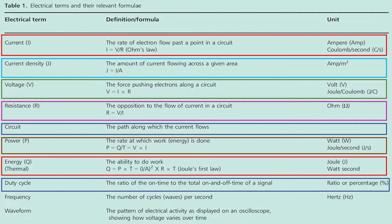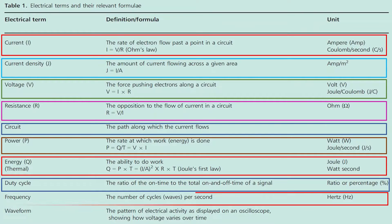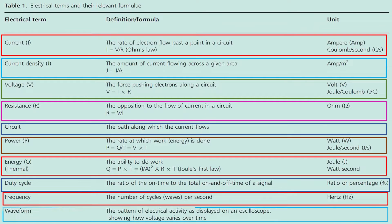Frequency is the number of cycles or waves per second; unit: hertz. Waveform is the pattern of electrical activity as displayed on an oscilloscope, showing how voltage varies over time.